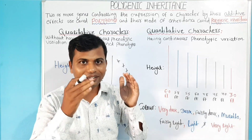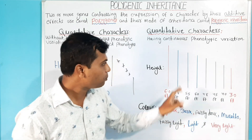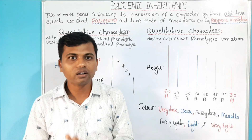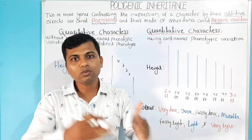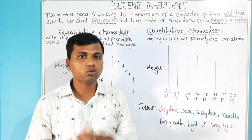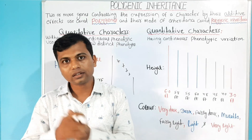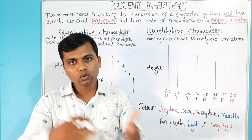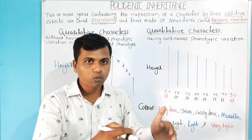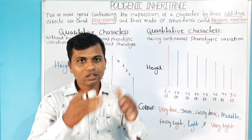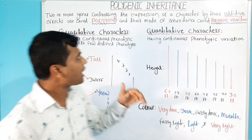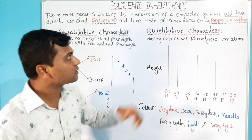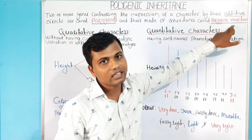Being the quantitative characters are having many phenotypes, a single gene with two alleles or a single gene with multiple alleles is not sufficient to control the quantitative character. To control the quantitative characters, two or more genes are required. So, the two or more genes which control the quantitative characters are called as polygenes and their mode of inheritance is called as Polygenic Inheritance.